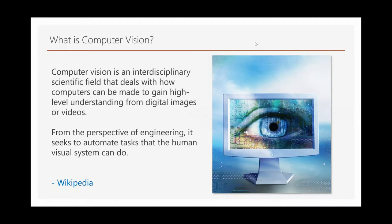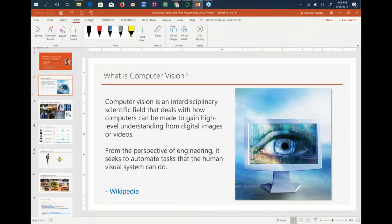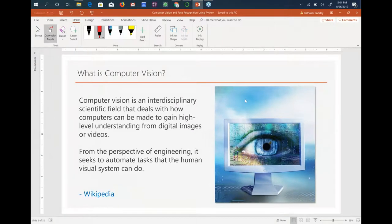Let's begin with the question: what is computer vision? Looking at a definition from Wikipedia, computer vision is an interdisciplinary field. The key operating word here is interdisciplinary — this is not just about data science, not just about programming, not about mathematics or linear algebra. It involves a variety of different fields altogether.